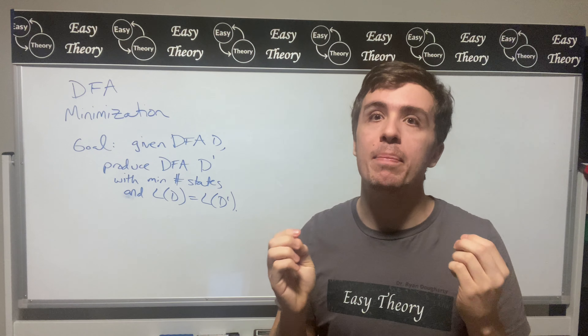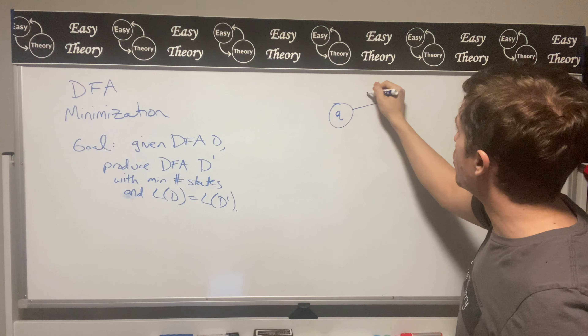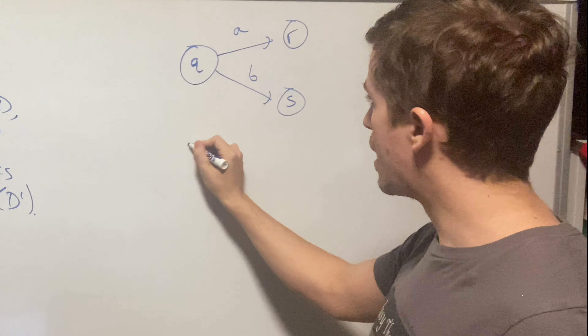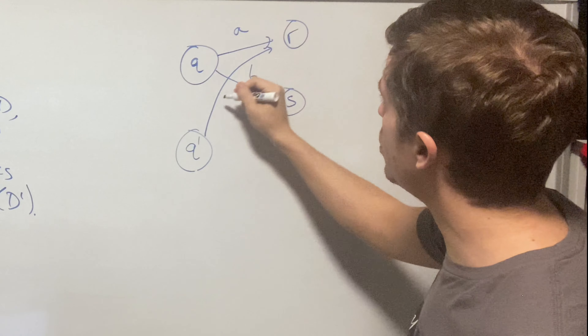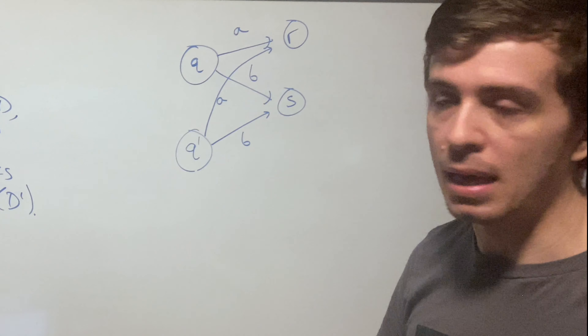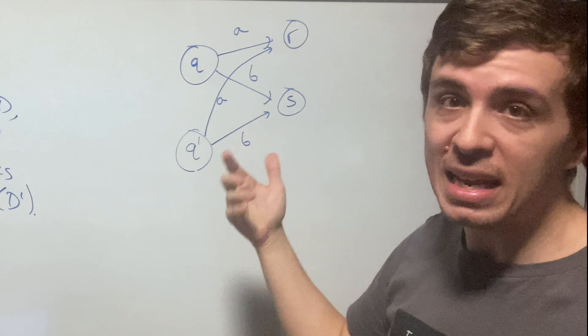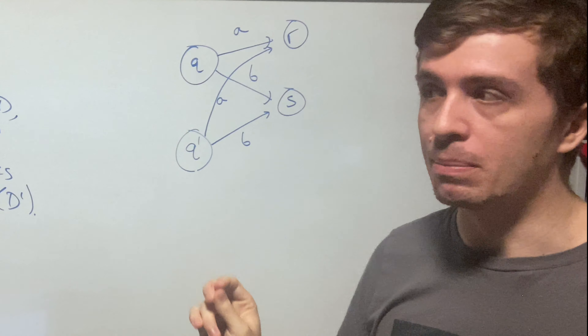Let's think about what a DFA actually means with a quick example. If we have a state q that reads an 'a' going to state r and a 'b' going to state s, and we have another state q-prime with the exact same behavior — q-prime on 'a' goes to r and on 'b' goes to s — then the behavior of these two states is identical.